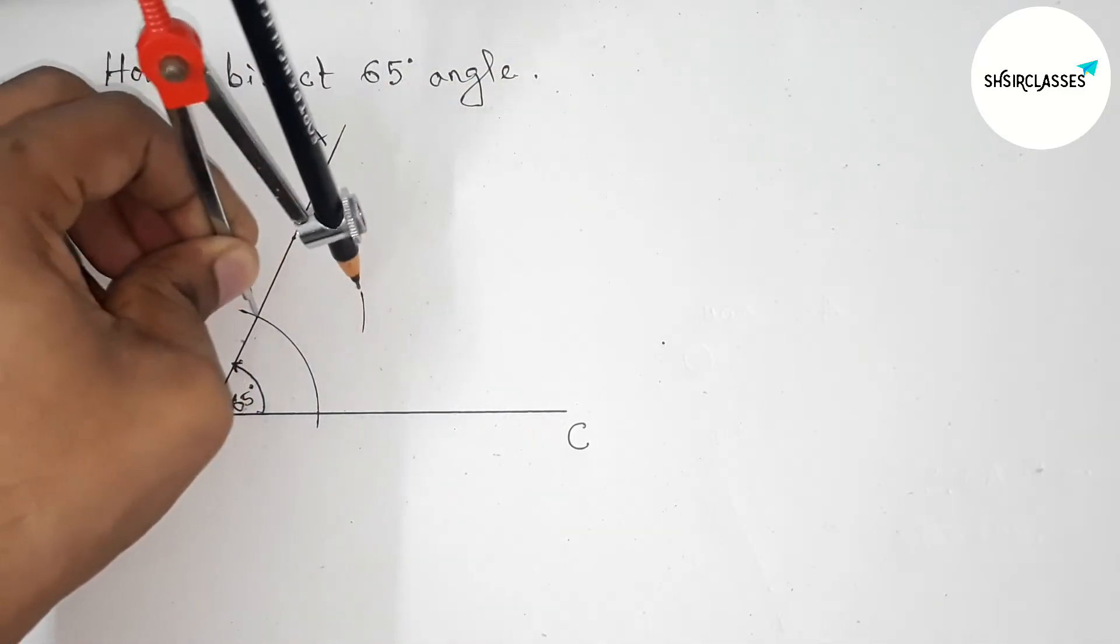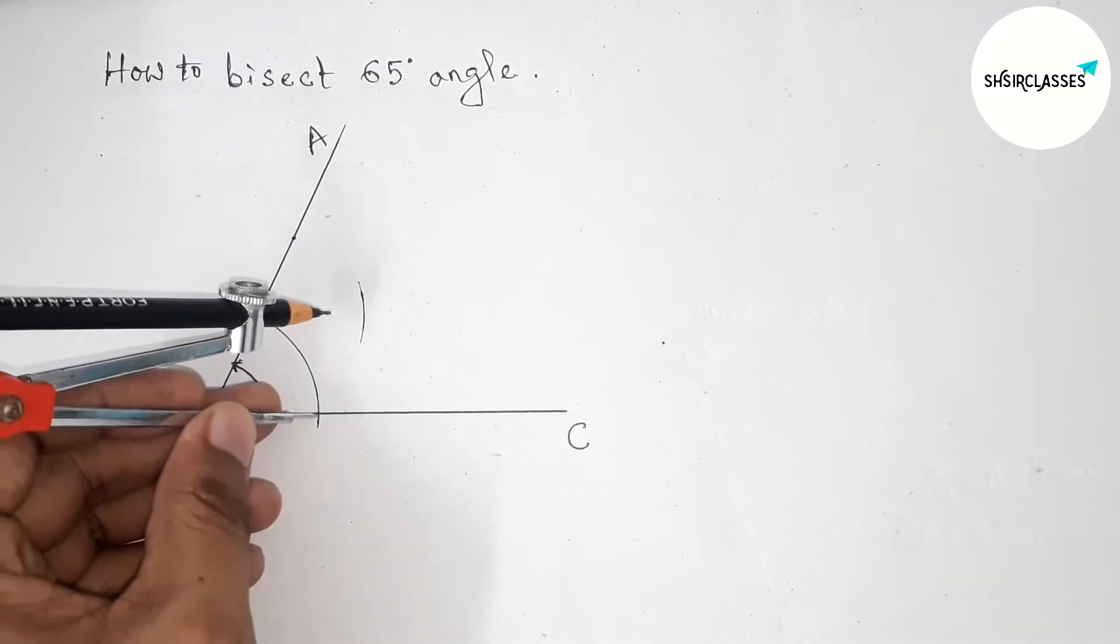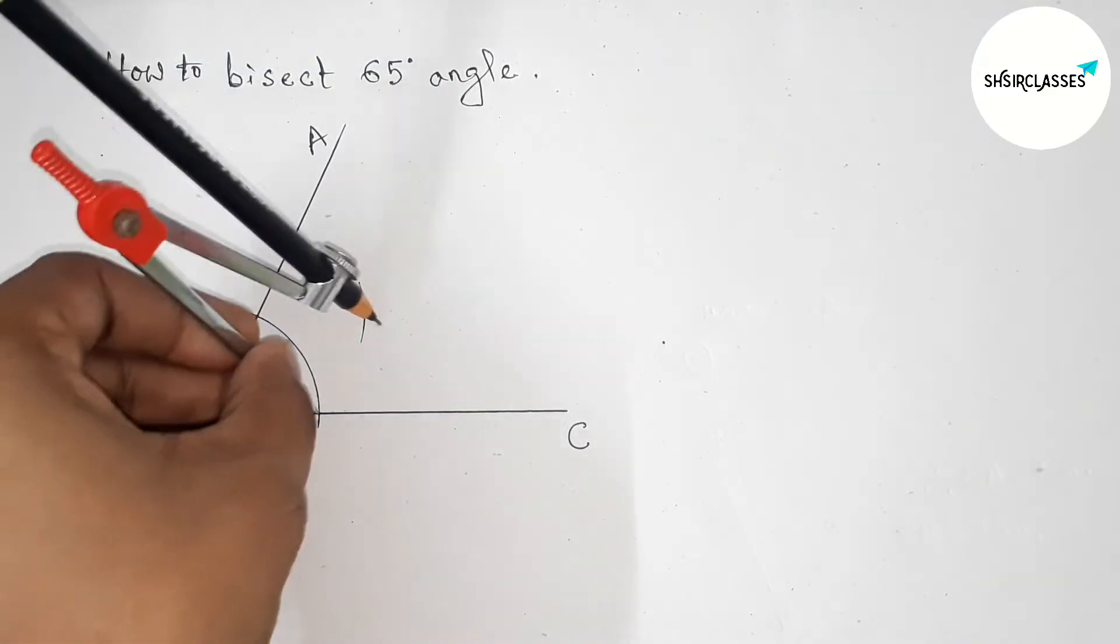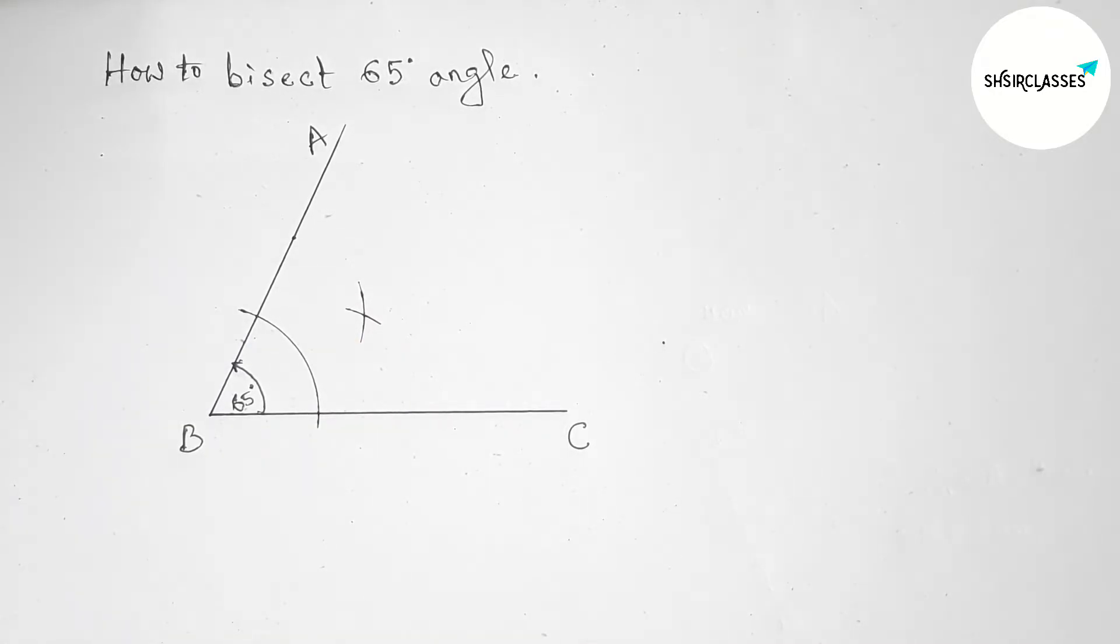Again with the same length, putting the compass here and cutting the arc to create an intersection.